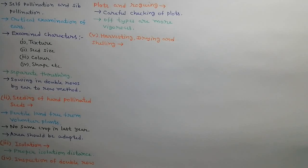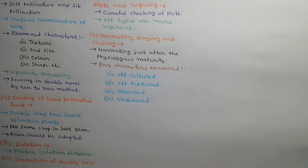Fifth step is harvesting, drying and shelling. If artificial drying facility is available then seed crop is harvested just after physiological maturity. Piles are critically examined for ear characters of colored, textured, diseased, undesired. If overall percentage of off-types are more than 0.1% then hand pollination is done again.